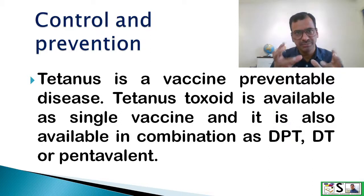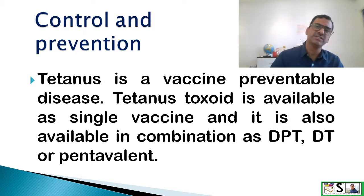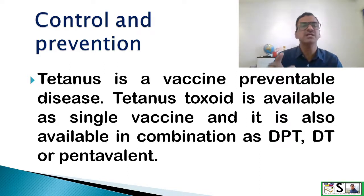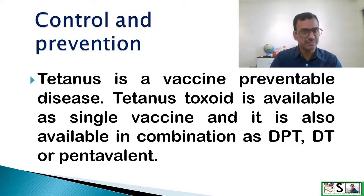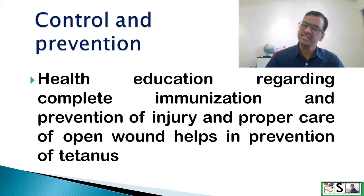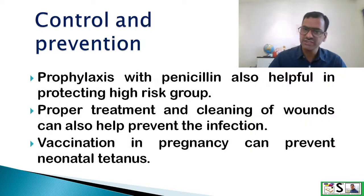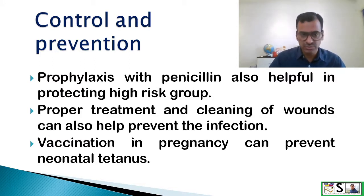The main focus is on control and prevention of tetanus. Nowadays we are very successful in controlling tetanus deaths, especially neonatal tetanus, by providing vaccines, because it is a vaccine-preventable disease. Tetanus toxoid is available as a single vaccine TT, and also in combination as DPT, DT, and pentavalent. Health education regarding complete immunization, prevention of injuries, and proper care of open wounds helps in prevention of tetanus. Prophylaxis with penicillin is also helpful in protecting high-risk groups, and proper treatment and cleaning of wounds can also prevent infection.